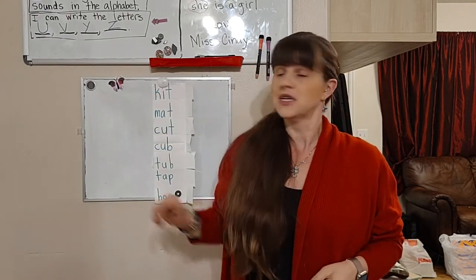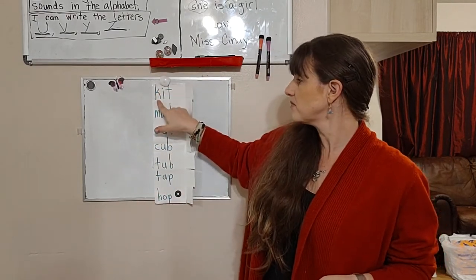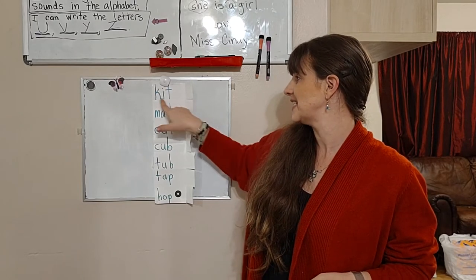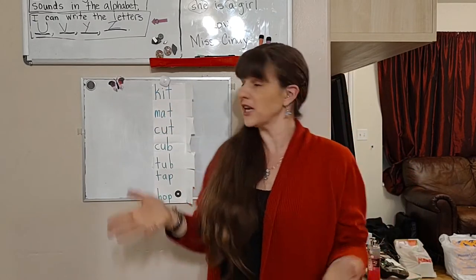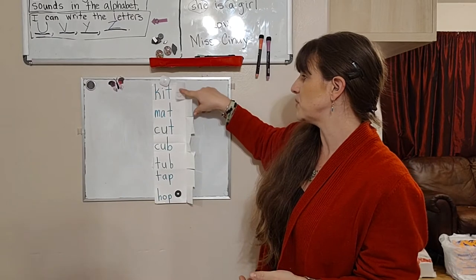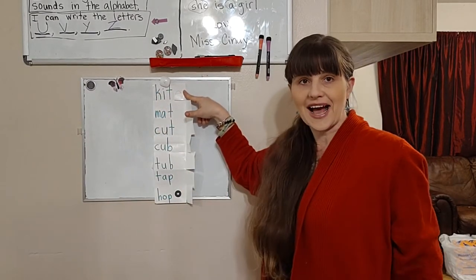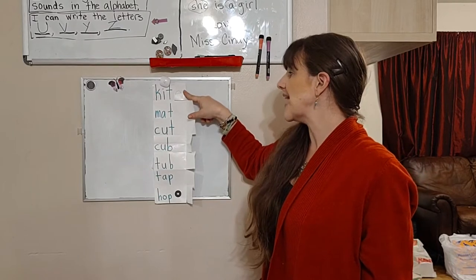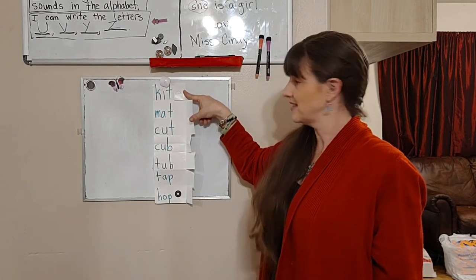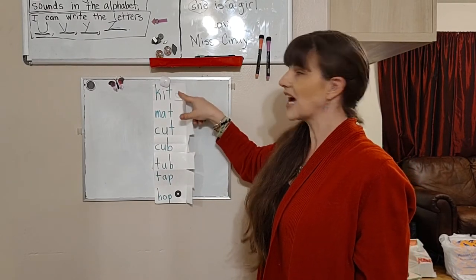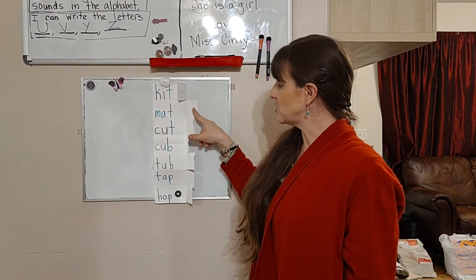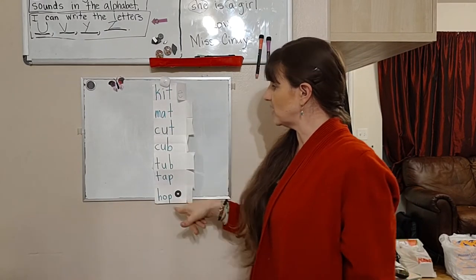When super e comes, it makes the vowel say its name. Here we have the word kit, like a first aid kit or something. But if you put super e there, that's going to make this i say i, so now it's kite. Kit, kite.